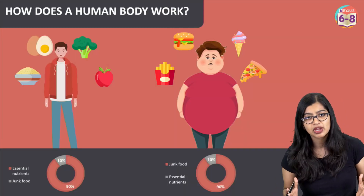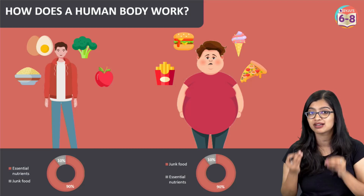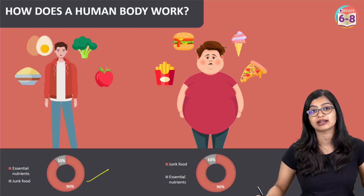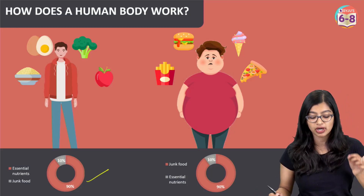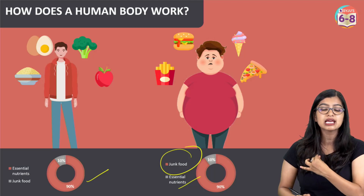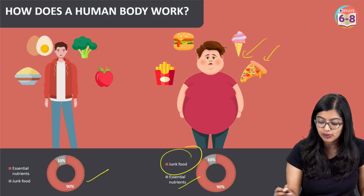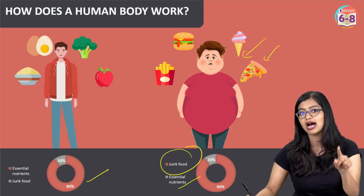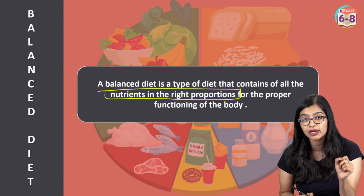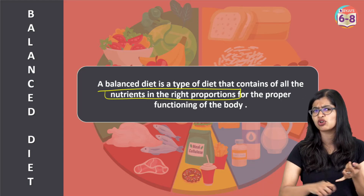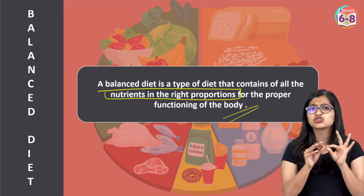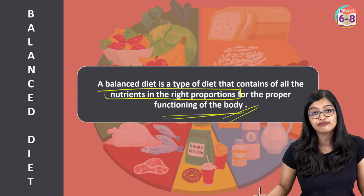Surprisingly, our body works the same way. If we provide our body with the right kind of food and nutrients in adequate amounts, it will function effectively. But if our diet mainly consists of junk food with very little essential nutrients, it can have a harmful effect. A diet in which all nutrients are present in the right proportions — adequate proportions — is what we call a balanced diet, and it is extremely essential for the proper functioning of the body.